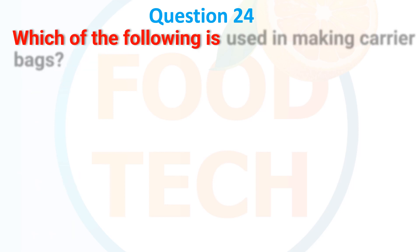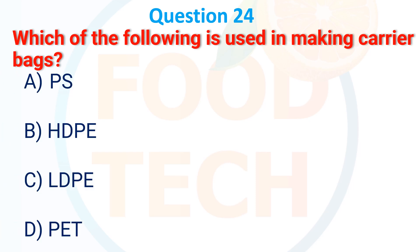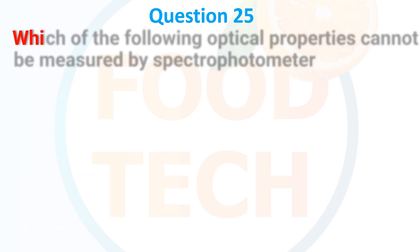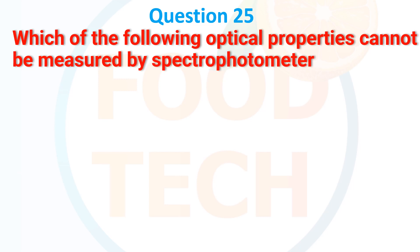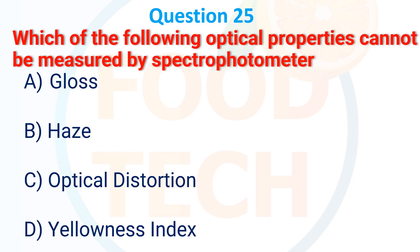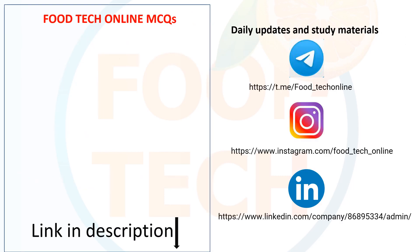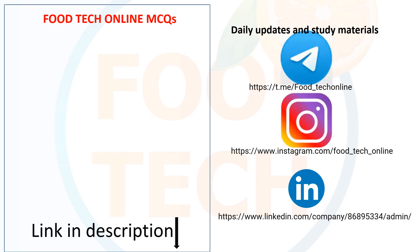Which of the following is used in making carry bags? A) PS, B) HDPE, C) LDP, D) PET. The answer is LDPE. Which of the following optical properties cannot be measured by a spectrophotometer? A) Gloss, B) Haze, C) Optical distortion, D) Yellowness index. The answer is A) Gloss.